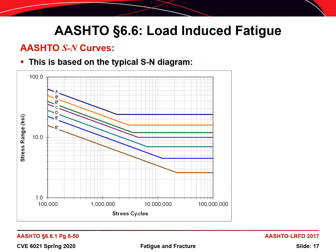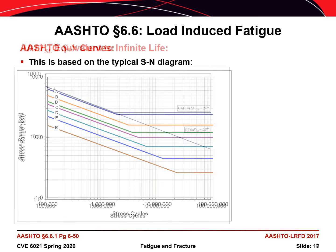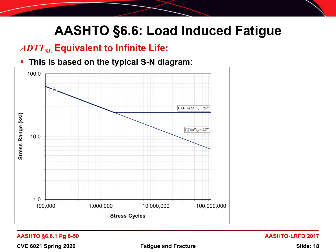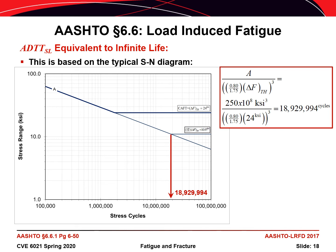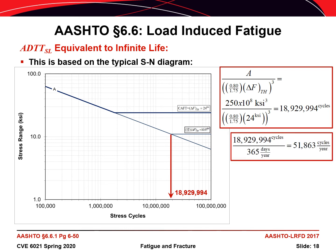Now let's take a look at the SN curves again from the AASHTO specification. Each of the curves represents a different fatigue category — categories A through E prime. Suppose we have a category A fatigue detail and look at the threshold stress of 24 KSI. That would correspond to a fatigue life of roughly 19 million cycles. Mathematically, we take the threshold stress of 24 KSI and divide by the ratio of 1.75 to 0.80 to get 10.97 KSI, then divide 250 times 10 to the eighth KSI cubed by that value to get 19 million cycles. Dividing by 365 days a year and 75 years for the bridge life, when lowercase n equals one, a single-lane ADTT greater than 692 trucks per day will be governed by the infinite life check.